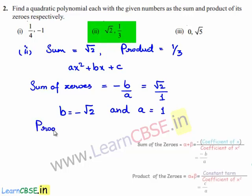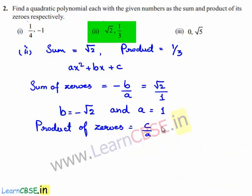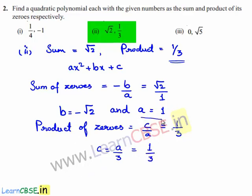Also, we know that the product of zeros is equal to c/a, and the given product is 1/3. So we can say c = a/3. But we found the value of a to be 1, so finally a = 1, b = -√2, and c = 1/3.